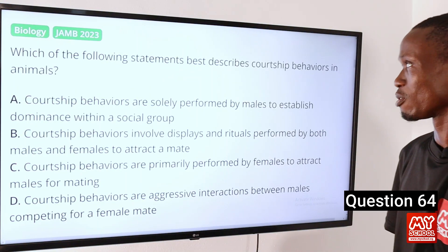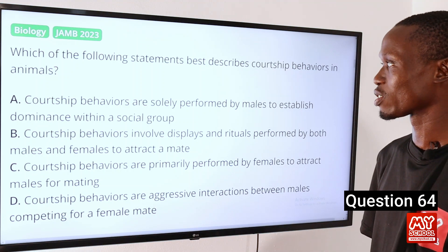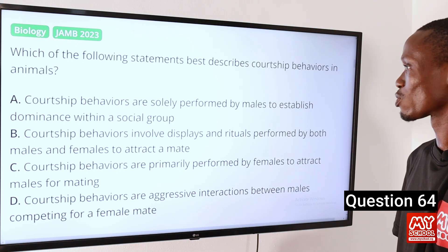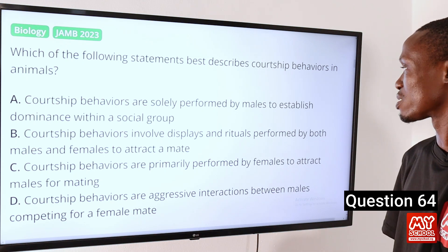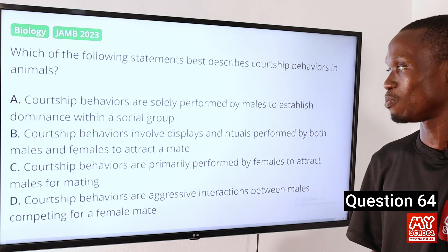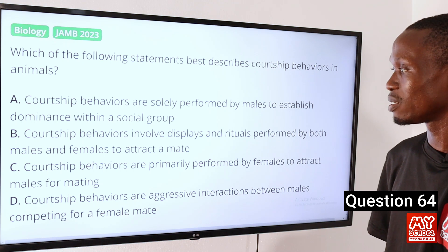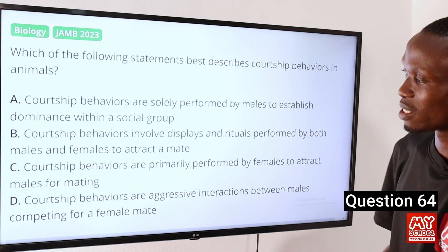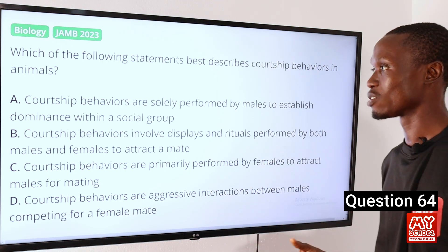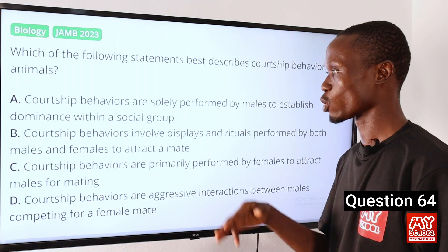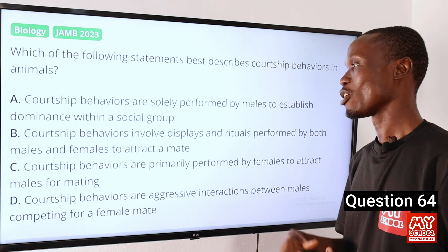Question 64: Which of the following statements best describes courtship behaviors in animals? A: Courtship behaviors are solely performed by males to establish dominance. B: Courtship behaviors involve displays and rituals performed by both males and females to attract a mate. C: Performed primarily by females to attract males. D: Aggressive interactions between males competing for a female mate. The answer is option B.